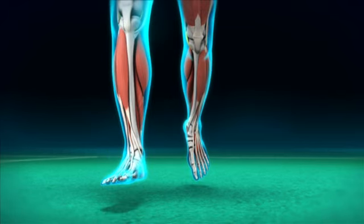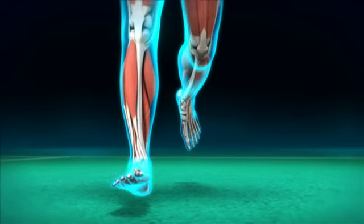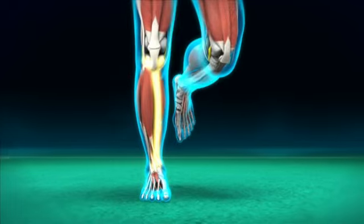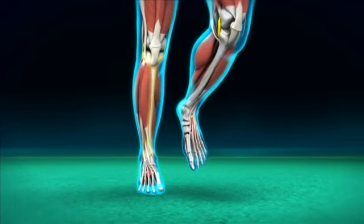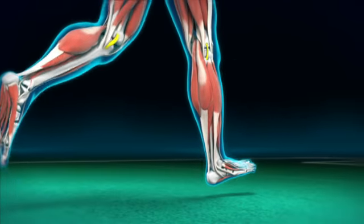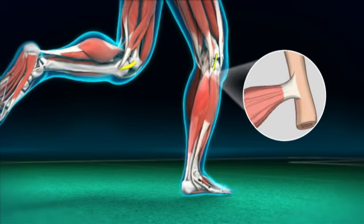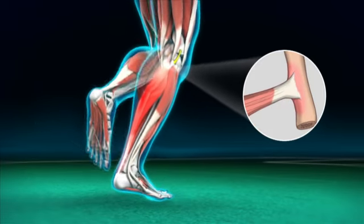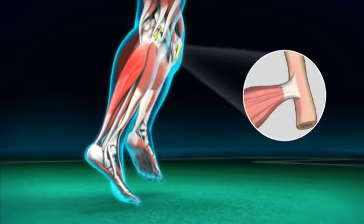There are different theories as to what precisely causes MTSS. Some think it comes from the bowing action of the bone as it bends to absorb shock. Others believe it comes from the pulling action of the muscles and their connecting tissues on the surface of the bone.